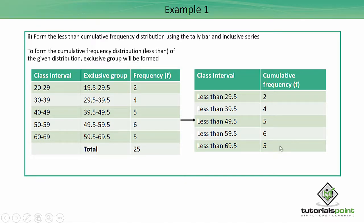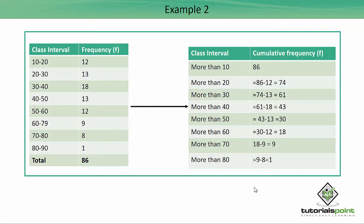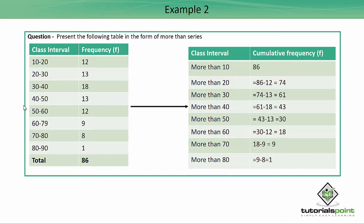Now let's move to example number two. Here, we have been given a table and asked to present it in a more-than series. We already have a normal continuous variable format table. To form a more-than series, the class intervals are written as more than 10, more than 20, more than 80, and so on, using the lower class limit. First, total the entire frequency — the total comes to 86.